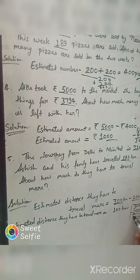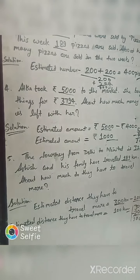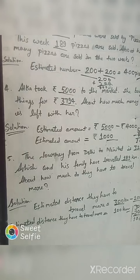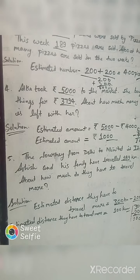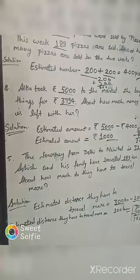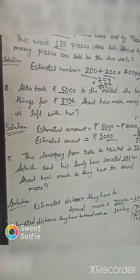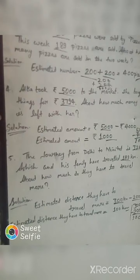300 minus 200: 3 minus 2 is 1, giving us 100 km. So the estimated distance they have to travel more is 100 km — meaning near about 100 km still needs to be traveled.